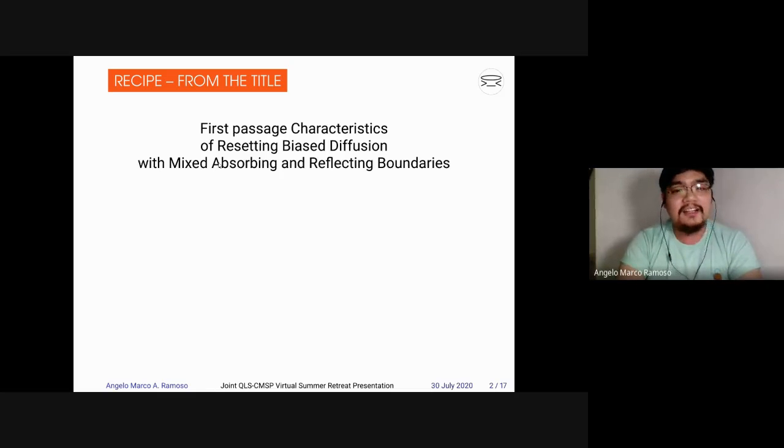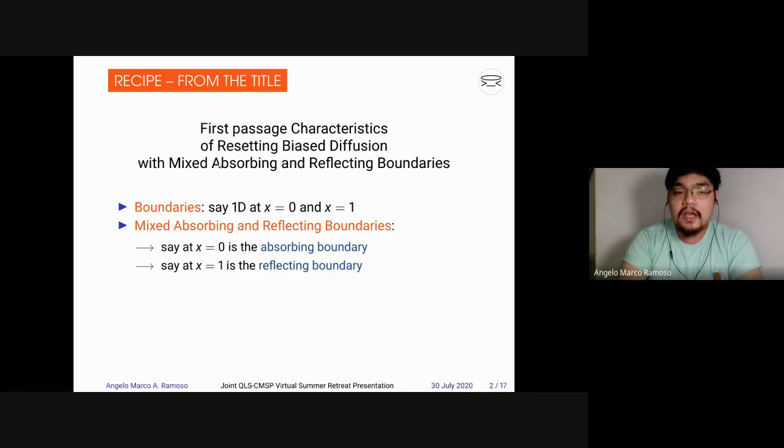From the title, since it's said there is a diffusion, we know a diffusion has so many things to talk about. It can be anything. So from the title, we'll narrow it down to what I'm going to talk for 15 minutes. From the title, first we have boundaries. The boundaries, let's say, for this talk, it will be only a one-dimensional lattice eliminated from x equal to 0 to x equal to 1. And then we also have absorbing and reflecting boundaries.